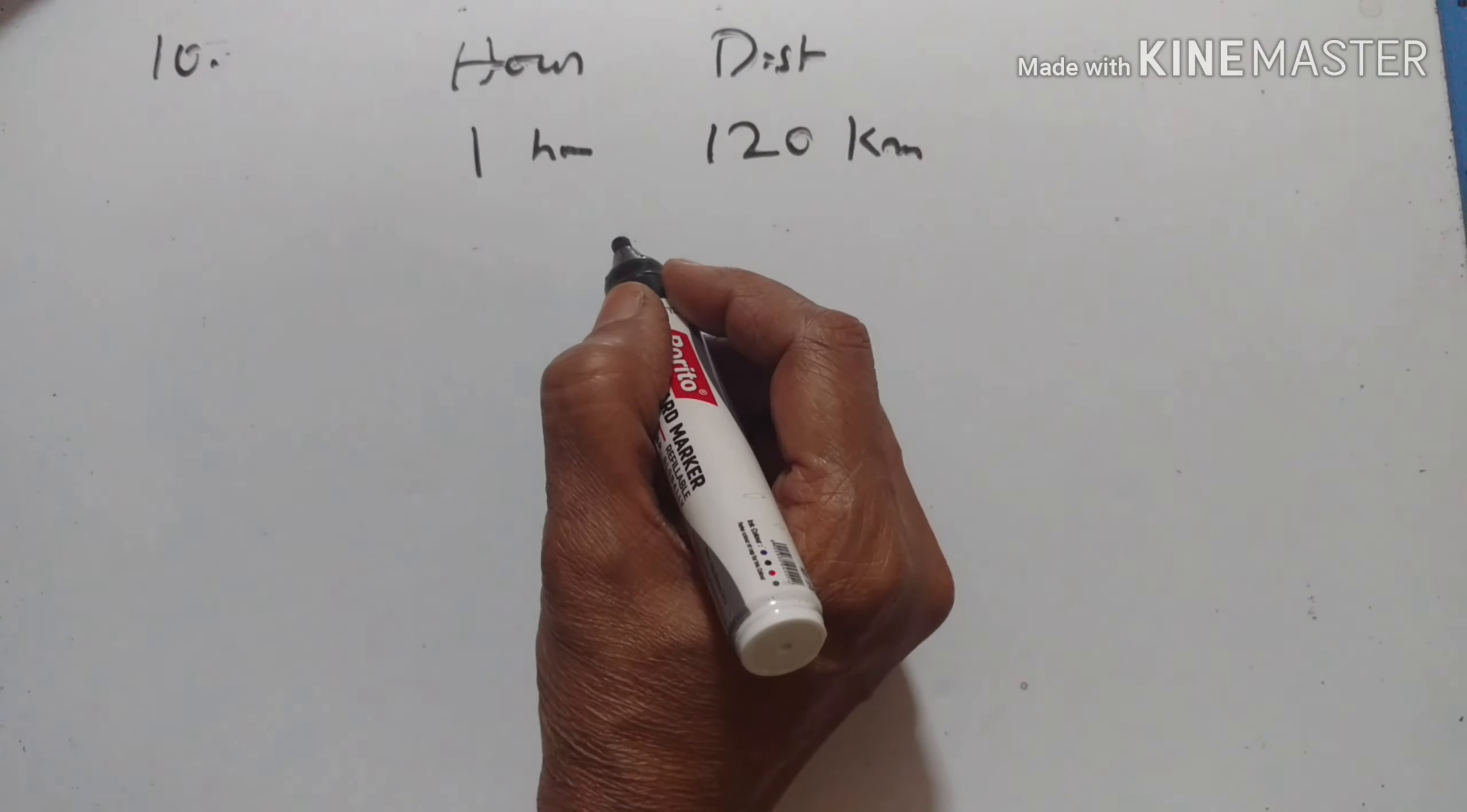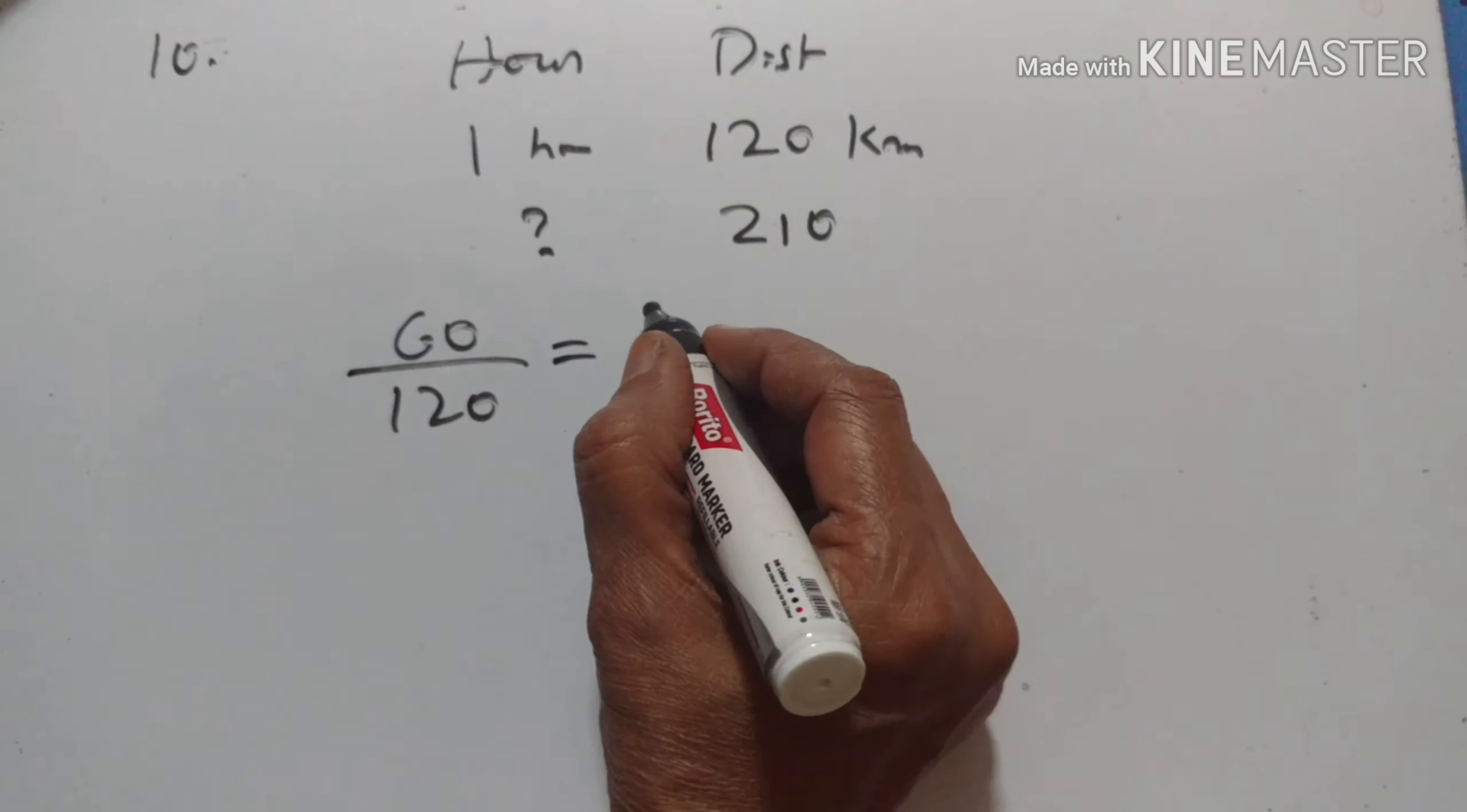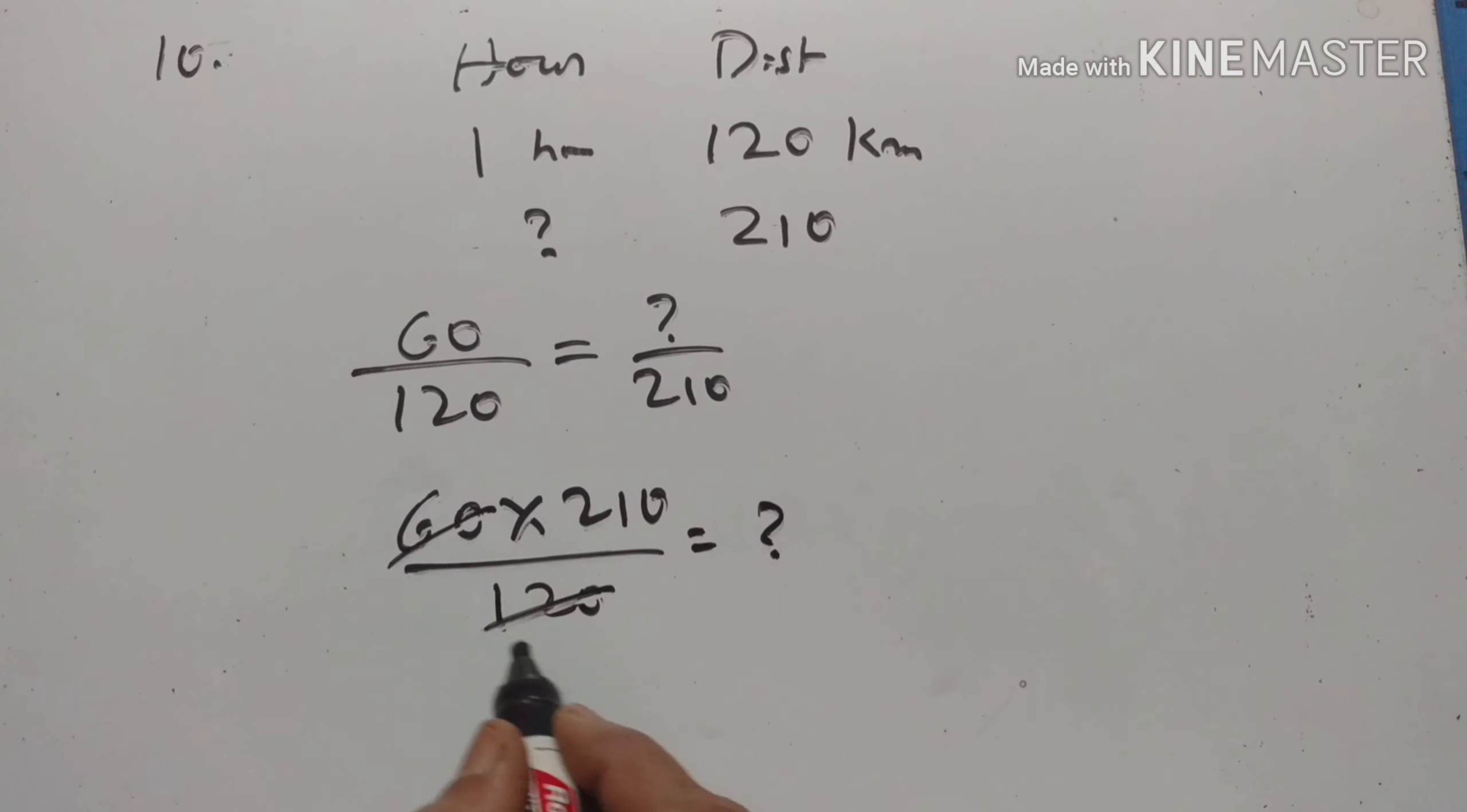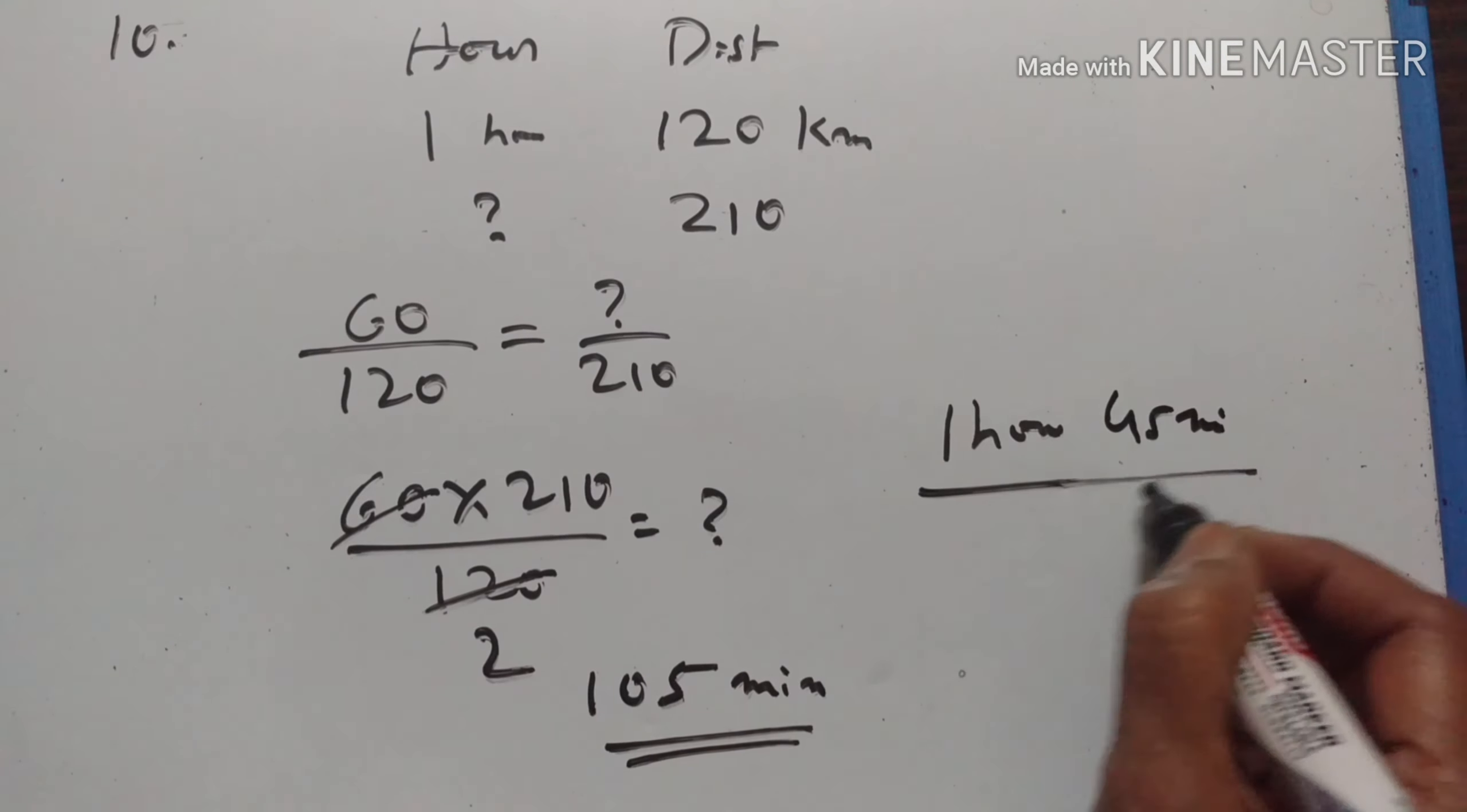In how much time will it cover 210 km? So 60 minutes upon 120 is equal to X2 upon Y2. 60 into 210 divided by 120. 60 on the 62s are, 60 per hour 2, 1s are 2, 2 5s are 10. 105 minutes. 105 minutes means 1 hour and 45 minutes. Thank you.